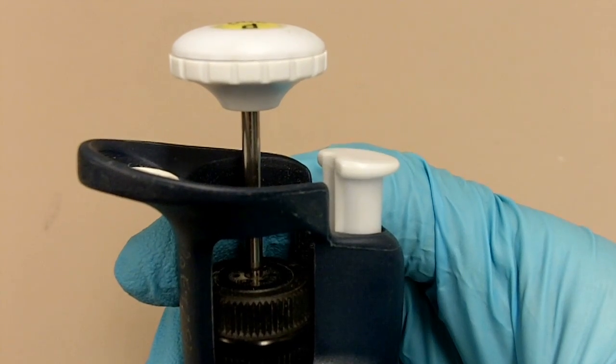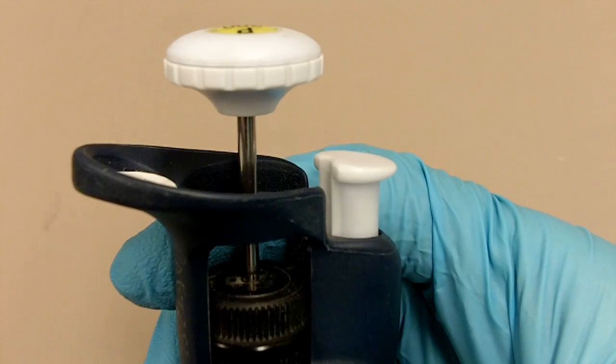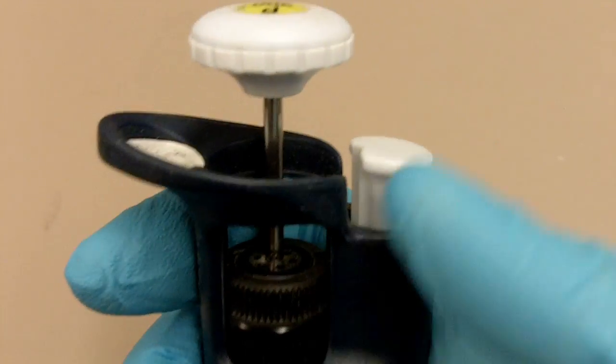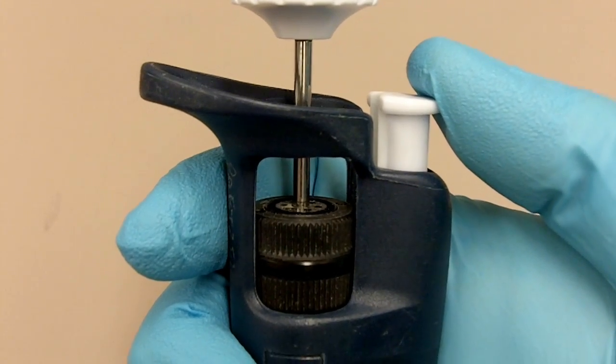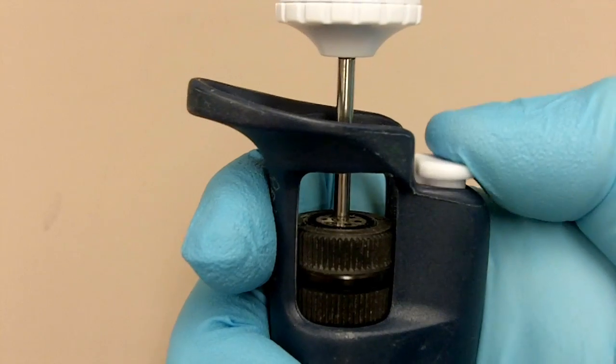So right now I'm going to show you how to eject the tip and how the ejector works. So here, this is the tip ejector button. When you want to eject the tip, all you have to do is press it down like that.